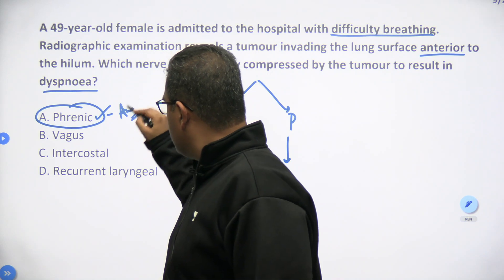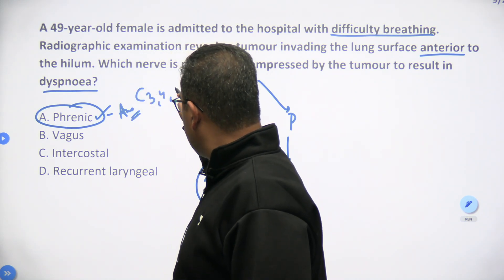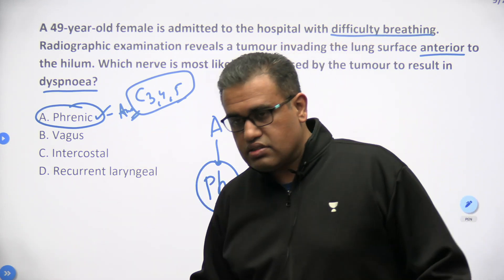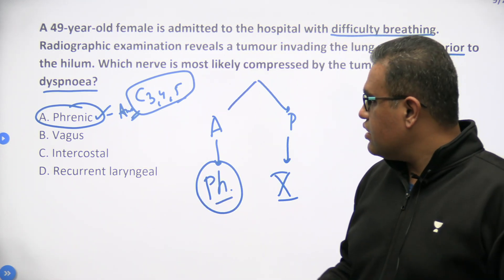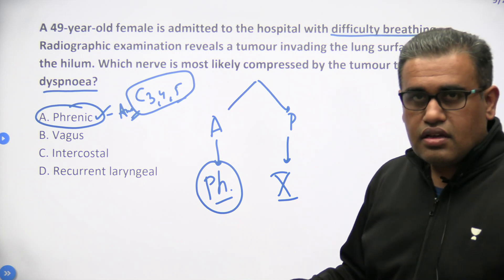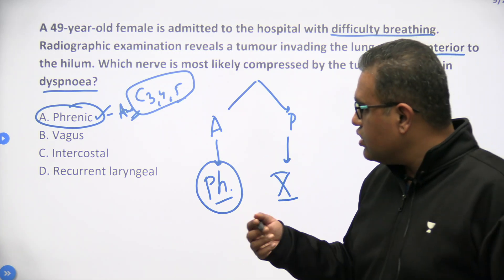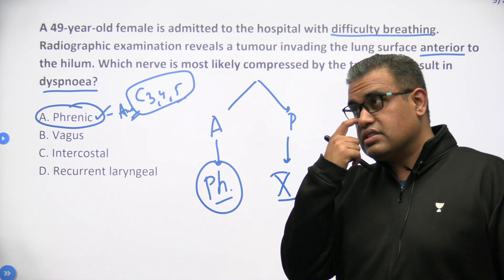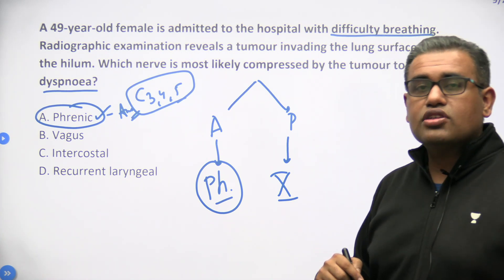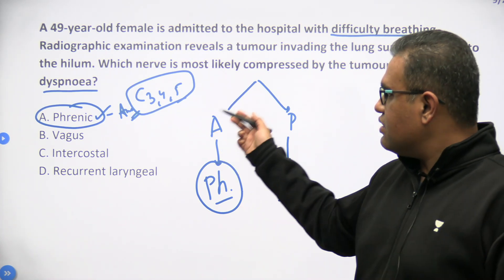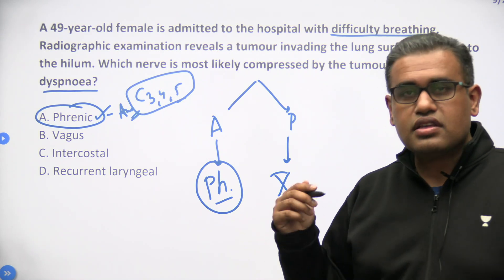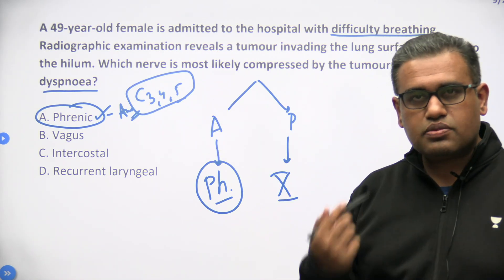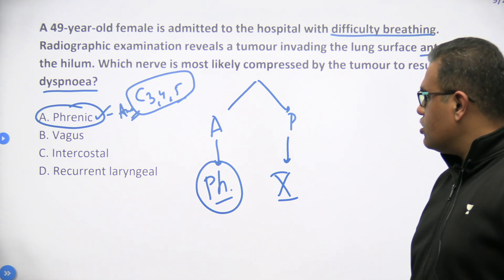Therefore, phrenic nerve is the best answer here. Also remember the root value: C3, 4, and 5. Vagus lies behind; intercostal nerves are obviously along the ribs; and recurrent laryngeal nerves are branches of vagus but they don't reach the hilum — the left recurrent laryngeal nerve only reaches up to the superior mediastinum, while the hilum structures are in the inferior mediastinum. So phrenic nerve is the best possible answer here.